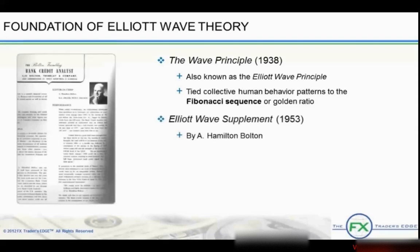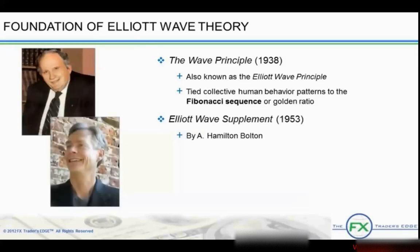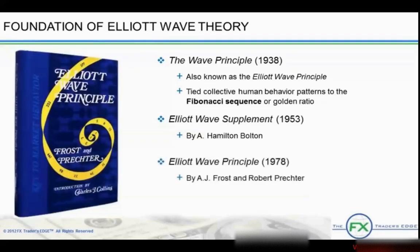In 1953, A. Hamilton Bolton, the founder of the Bank Credit Analyst, published the Elliott Wave supplement. This annual report was published for the next 14 years until his death, at which point A.J. Frost, in collaboration with Robert Prechter, took over the supplements, and in 1978, together, they wrote The Elliott Wave Principle, considered one of the definitive textbooks on wave theory. Prechter further published several other books on Elliott and his principles.